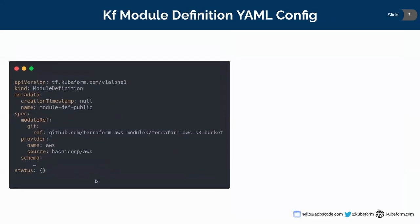Now let's see what a QFM module definition looks like. This QFM module definition is generated by the QFM CLI. QFM supports both public and private Git repositories, so we can generate QFM module definitions for both. On the left side, this is for public Git repositories. The name of this is module-def-public, and there are a couple of fields under spec: module ref, provider, and schema.